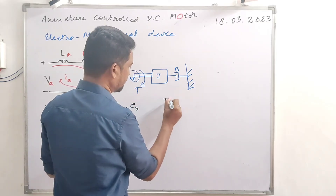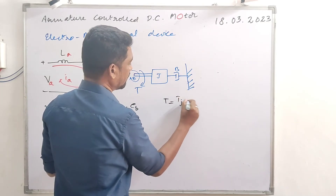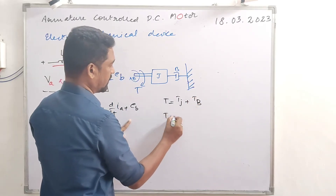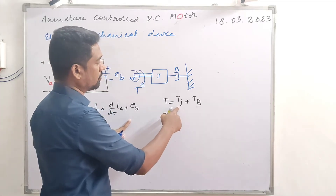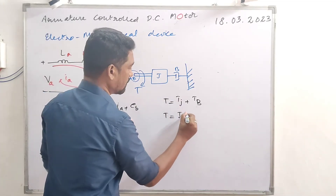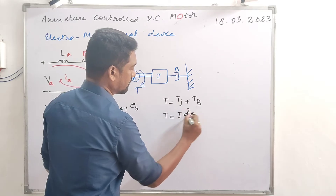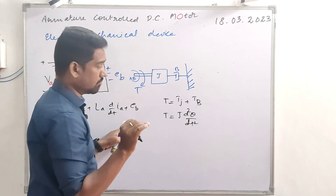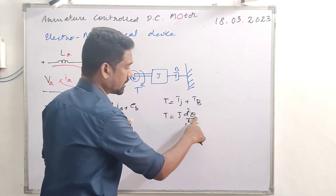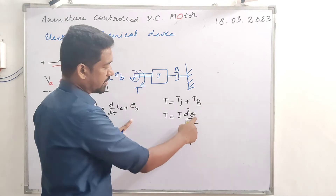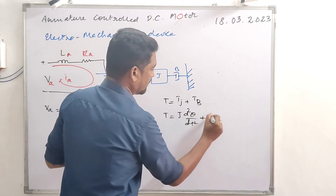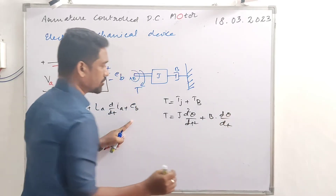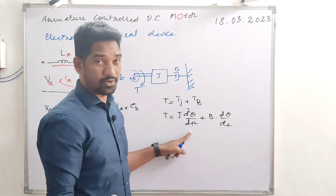The torque equation for the mechanical part: T = Tj + Tb. So T = J * d²θ/dt² + B * dθ/dt, where J is moment of inertia and B is the friction coefficient.